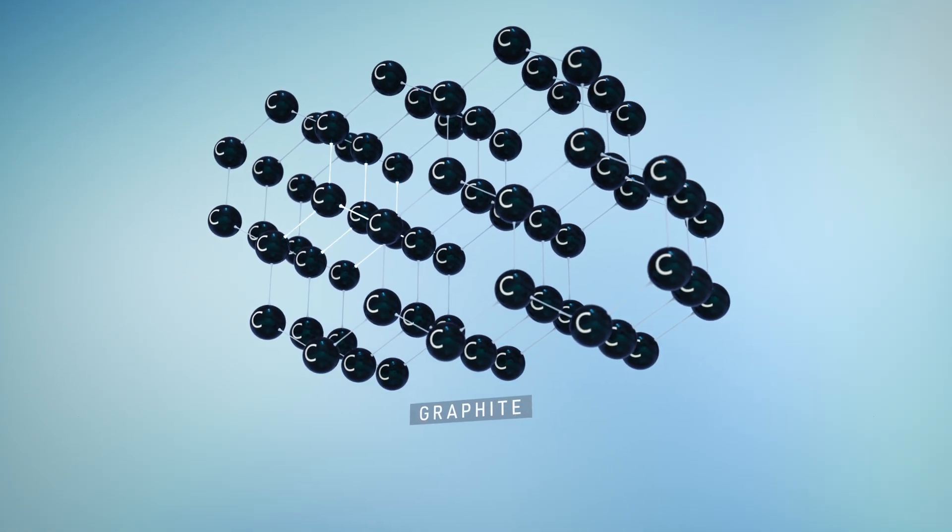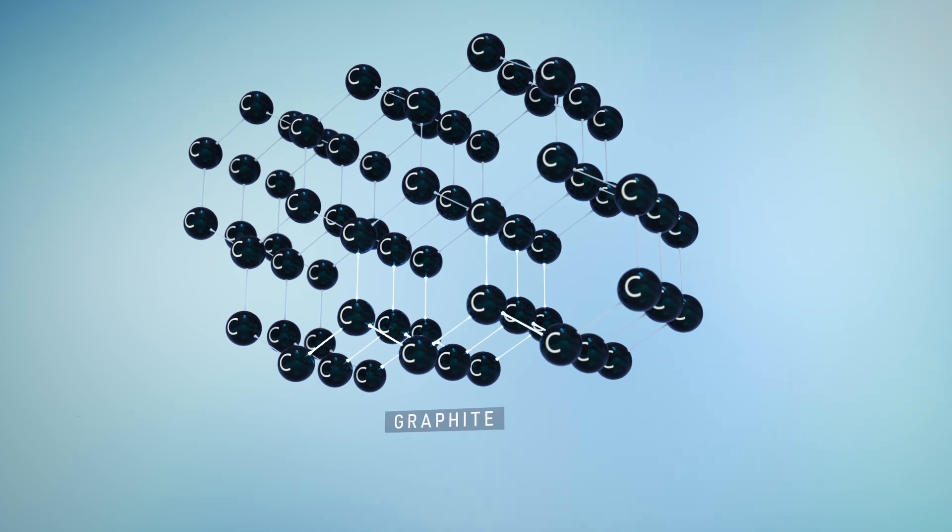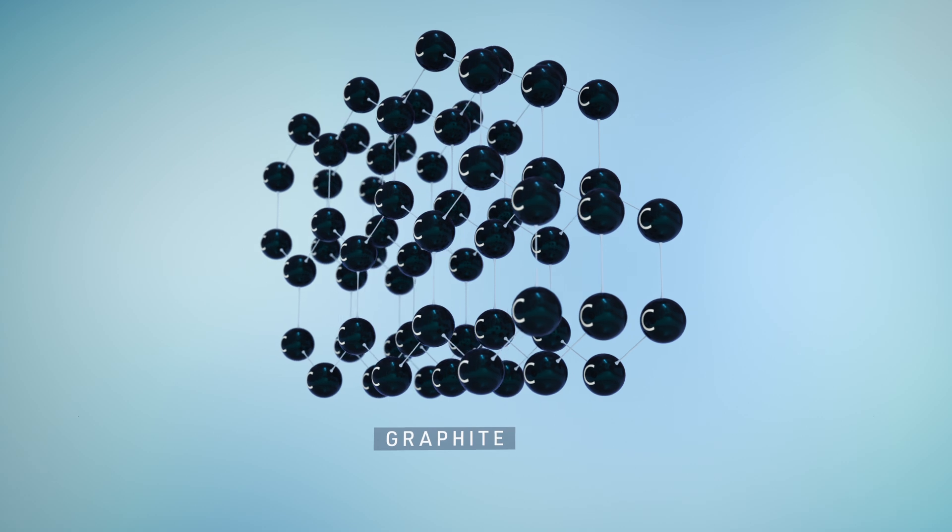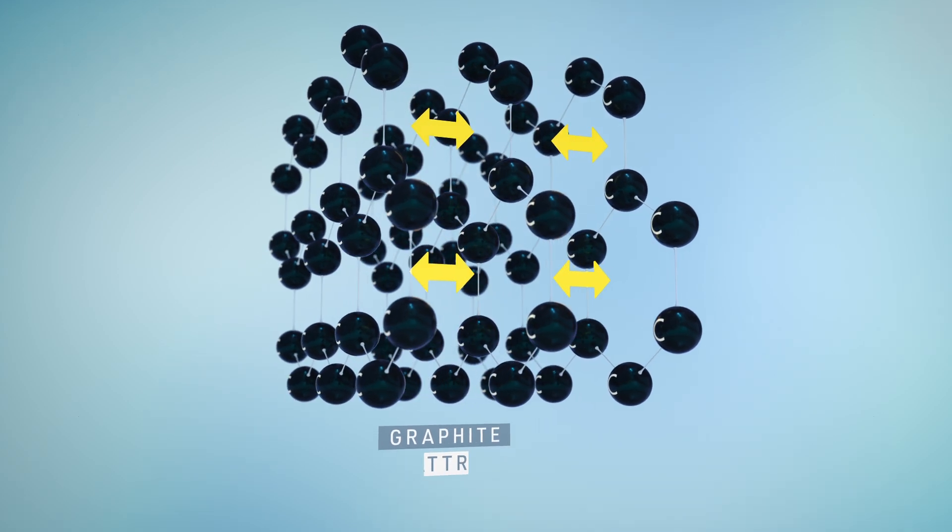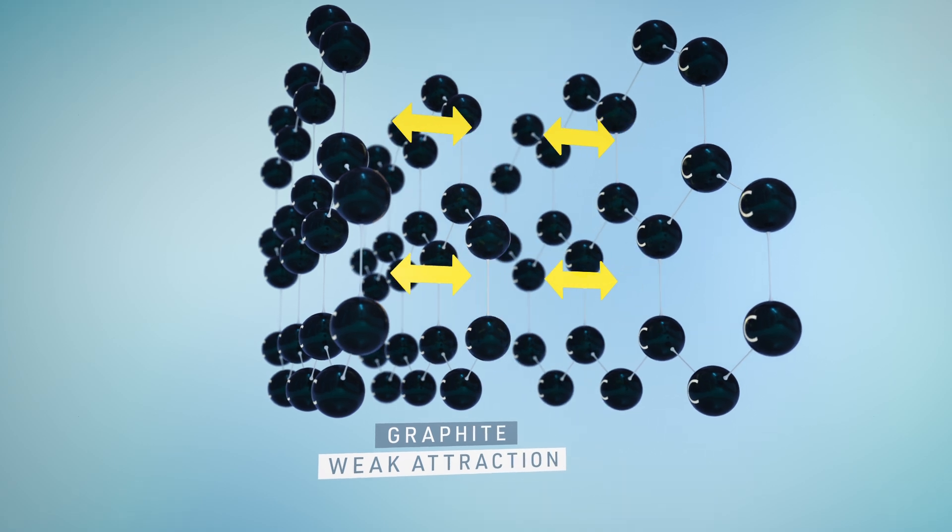In graphite, each atom is linked to three others in layers of hexagonal shapes. The bonds within the hexagonal sheets are strong, but each layer is only weakly attracted to the next, which allows the layers to slip by one another.